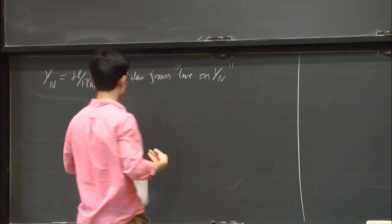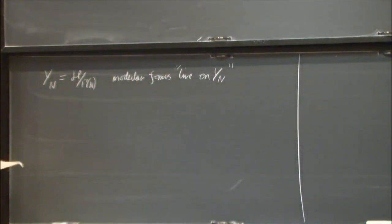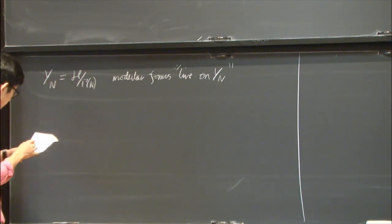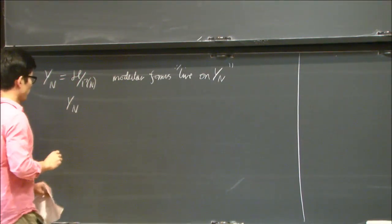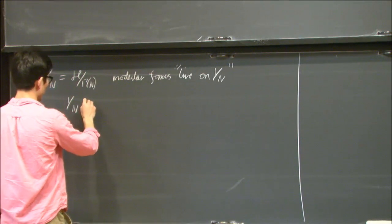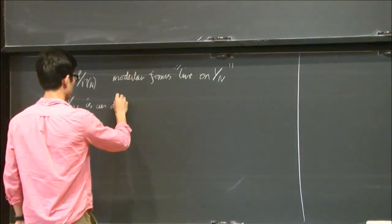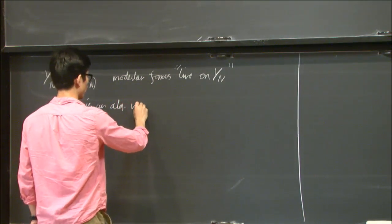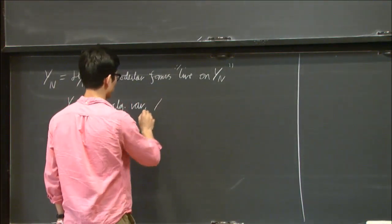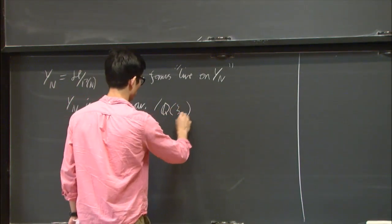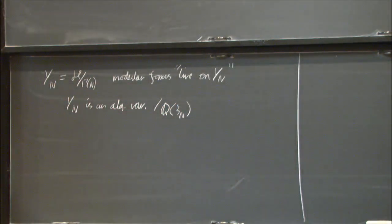It turns out modular forms sort of live on yn. To be more precise, modular forms occur as sections of line bundles on this Riemann surface. In general, Shimura varieties are like spaces on which automorphic forms live. The magic thing that happens is that yn is actually algebraic, so it's an algebraic variety, but not only over some large field like the complex numbers, but actually over a number field, so it's algebraic over this field Q adjoined the nth roots of unity.